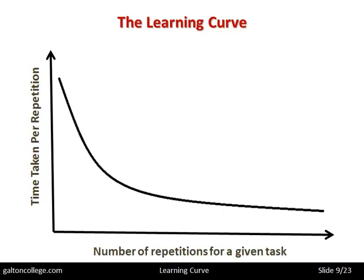The learning curve would look something like this. The number of repetitions for a given task — the more we do it — the time taken per repetition falls as we do more and more repetitions. But the curve tends to flatten out towards the right-hand side. The reason is it'll still take us some time to perform the task. Even though we become super efficient, it'll still take time. And there will be a point at which there are no more efficiencies to be had — we have become as efficient as is possible, at which point costs will be fixed.